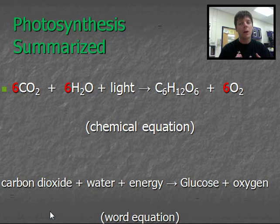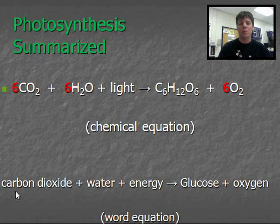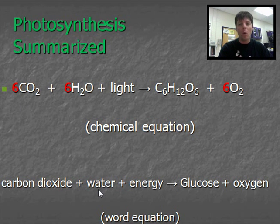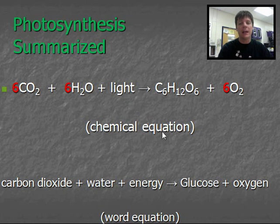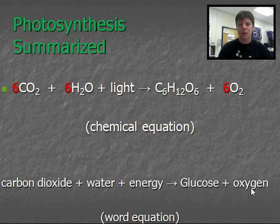Now a word equation to summarize this process would be that carbon dioxide, that's CO2, is reacting with water, H2O, in the presence of energy — and the energy is in the form of light — to produce glucose, that is the sugar, plus oxygen.